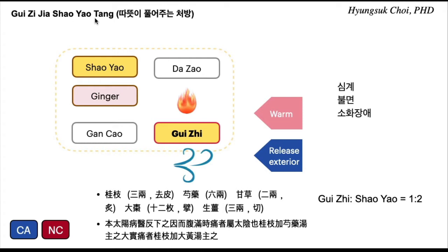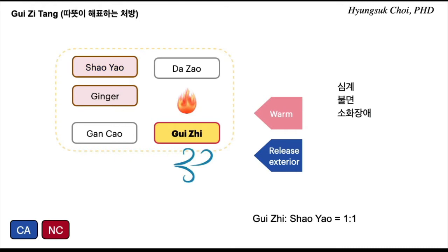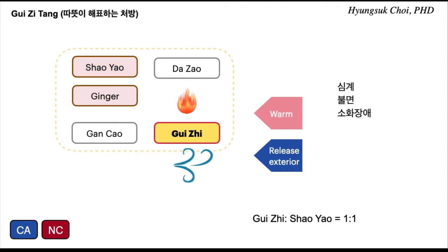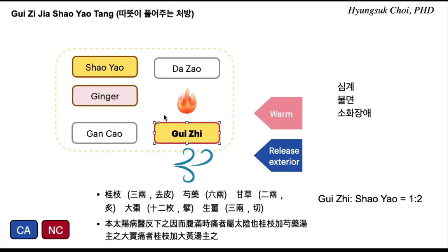This is from Shanghan Lun. Actually, there is no difference — same structure, same composition. Gui-ji, xiao-yao, and jin-ji. The only difference is the ratio of these two herbs.